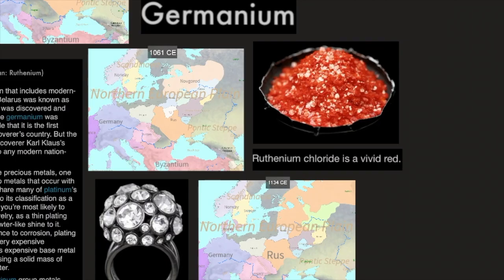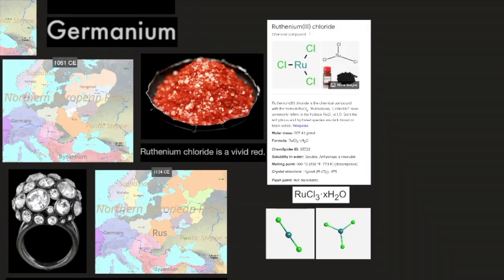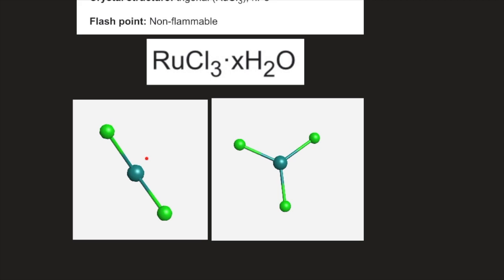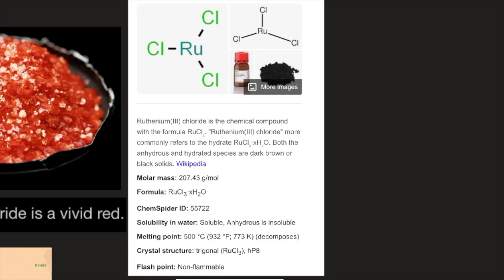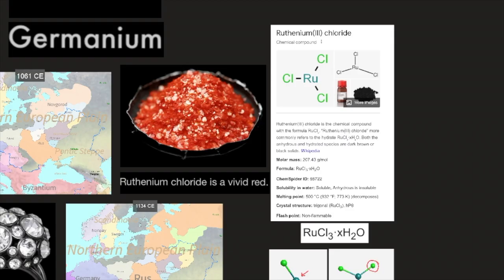Here's an image of Ruthenium chloride. Ruthenium chloride is a vivid red. Here we have the Ruthenium atom and the chlorine atom. Here is a side view of the atom, and here is another view. Here we have the three chlorine atoms. The chlorine atom is behind, so I presented two photos of it. Ruthenium chloride is the chemical compound with the formula RuCl3. More commonly refers to the hydrate RuCl3·xH2O. Both the anhydrous and hydrated species are dark brown or black solids. Here in the image, the book presents Ruthenium chloride as a vivid red, and according to Wikipedia, it's a dark brown or black solid compound.